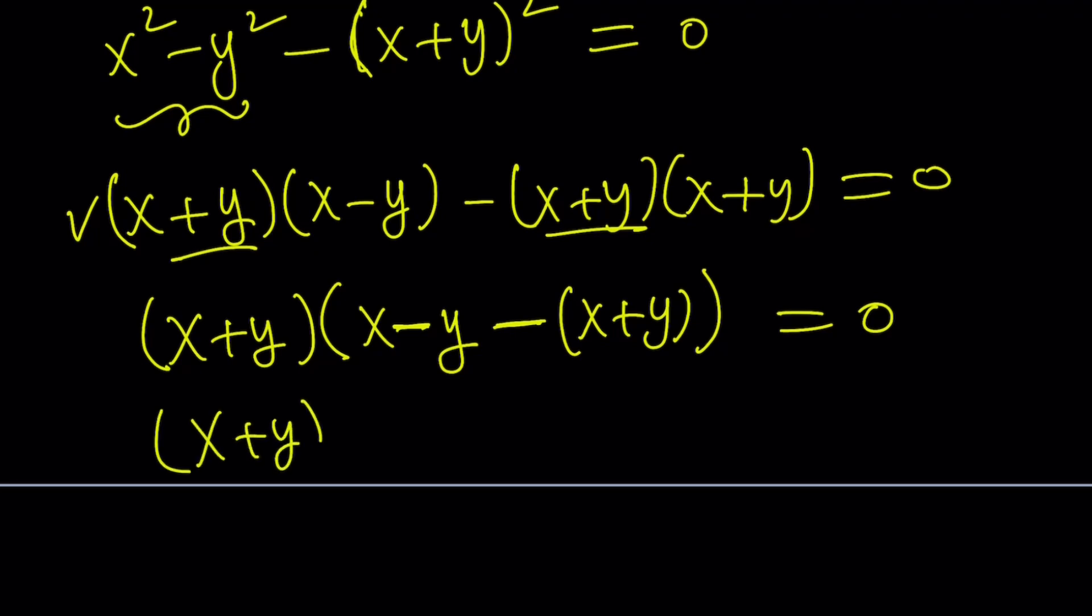So x plus y, and then here what happens? x minus x is 0, and negative y minus y is negative 2y. So let's go ahead and write it that way.